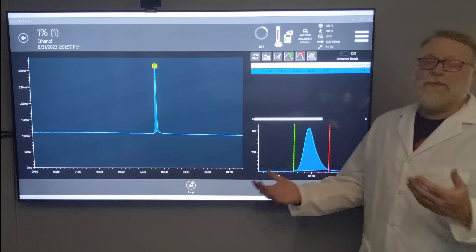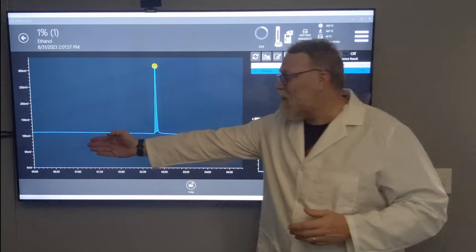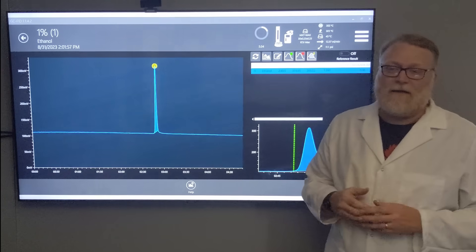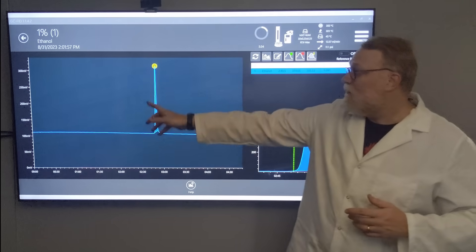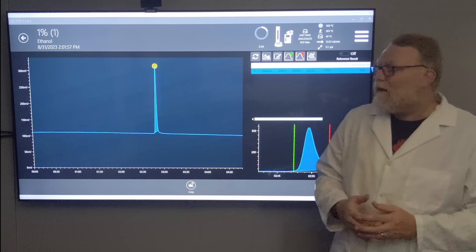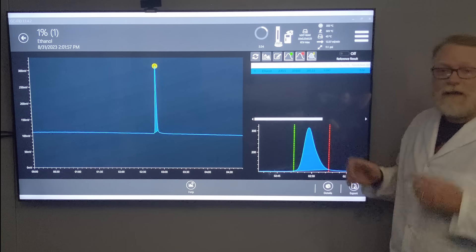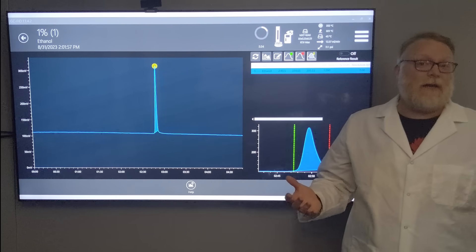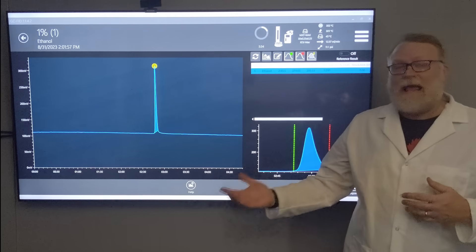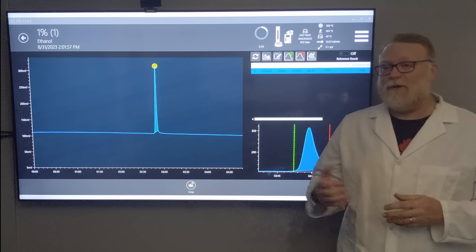First, we need to understand what we get out of our HPLC and GC systems. We get a chromatogram which gives us a peak, shown here. If you see here highlighted in blue and zoomed in, it gives us the area under the curve. That area under the curve correlates to how much substance I've put in.